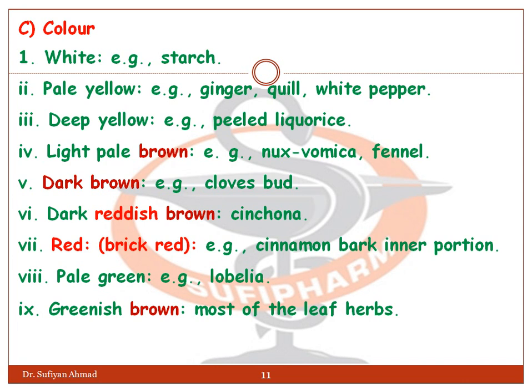Dark brown to reddish brown — example clove bud. Dark reddish brown — example cinchona red. Brick red — example cinnamon bark inner portion. Pale green — example lobelia. Greenish brown — most leaf herbs.